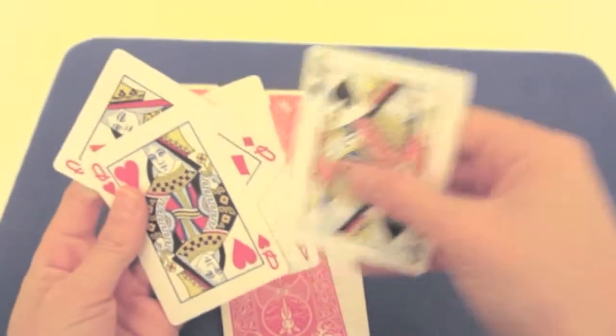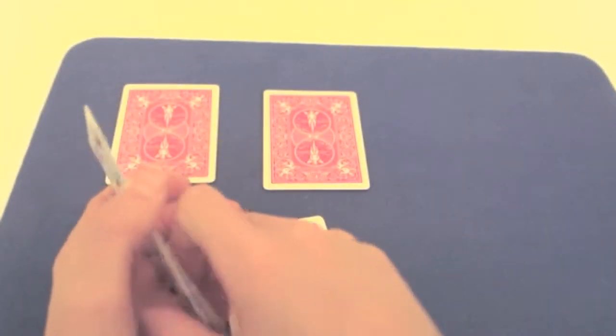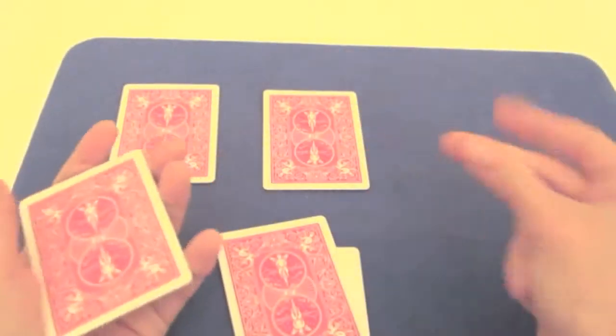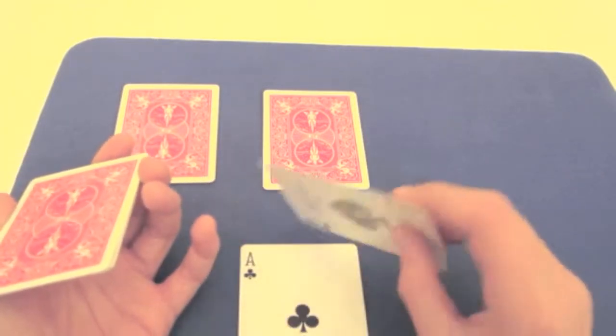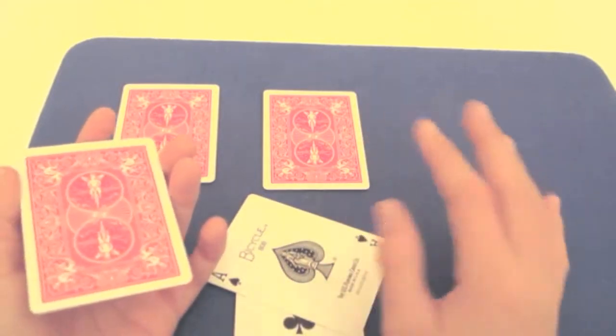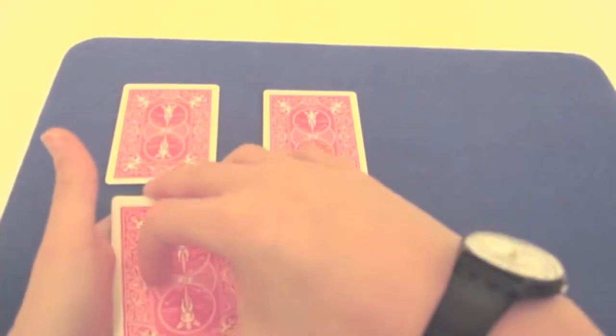Because when you're finished, your ace goes at the back. You just say, I don't have any more ace because you showed it when doing the Elmsley count. And it's there. Wow, magical. Now you do the same thing.